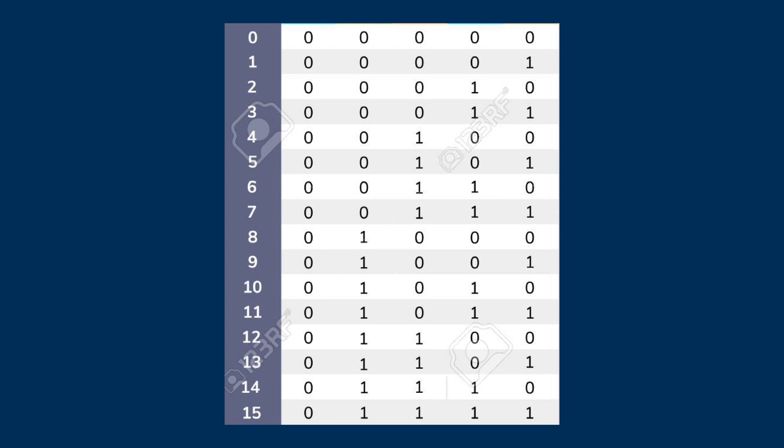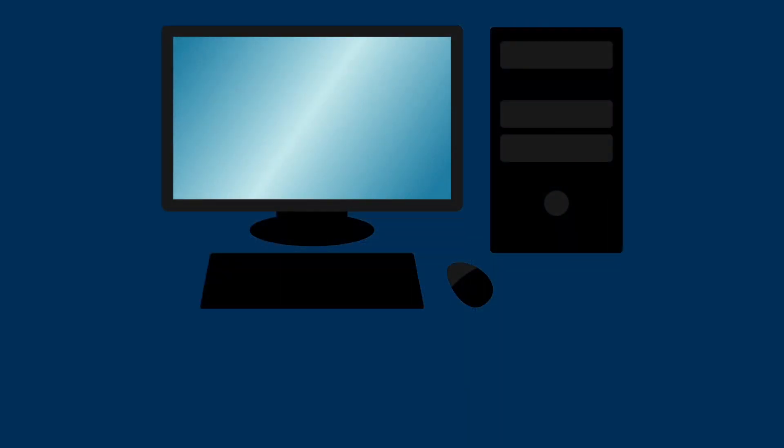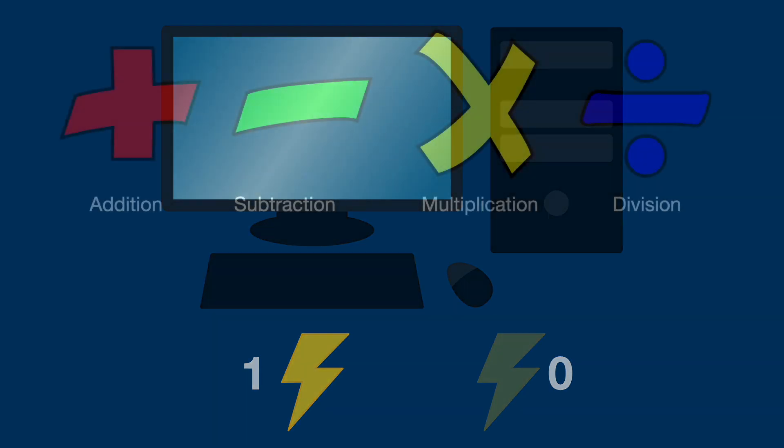Each one or zero is called a bit. Computers use the binary system since they work based on the presence or absence of a high electric current, so larger number systems like decimal can be quite clunky to work with at that level.